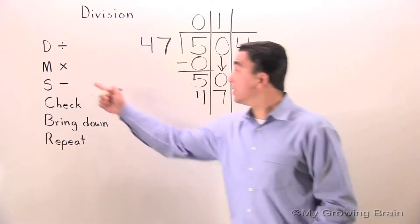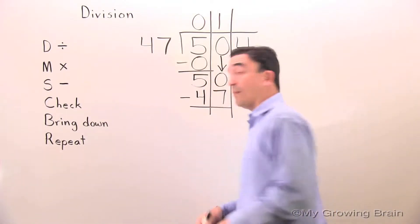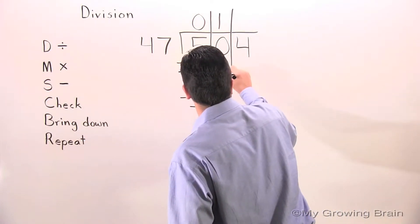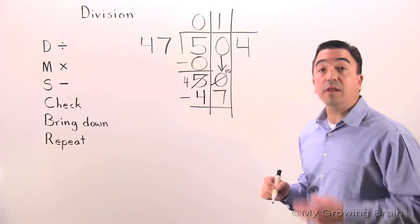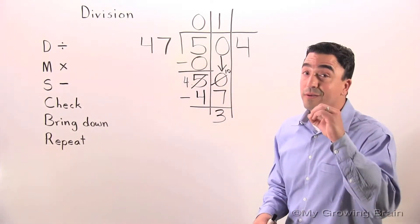Next step, subtract. Well, I can tell right away I'm going to need to regroup. 10 minus 7, 3. 4 minus 4, 0.